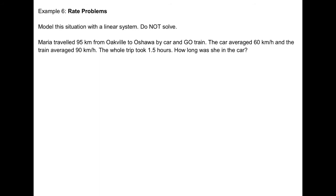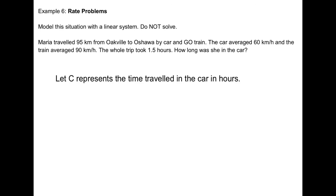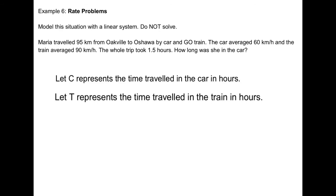Example 6: Maria traveled 95 kilometers from Oakville to Oshawa by car and by GO train. The car averaged 60 km/h and the train averaged 90 km/h. The whole trip took 1.5 hours. How long was she in the car? Step 1: define the variables. Let C represent the time traveled in the car (in hours), and let T represent the time traveled in the train (in hours).